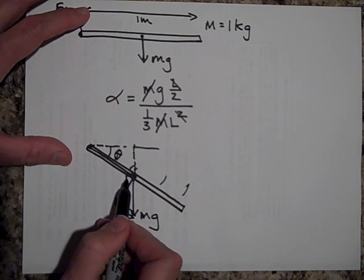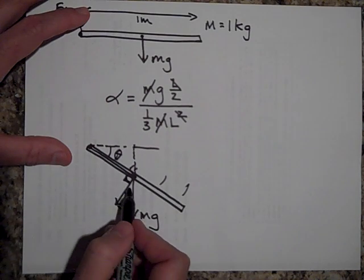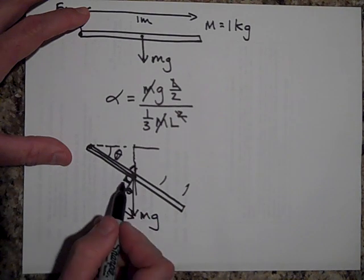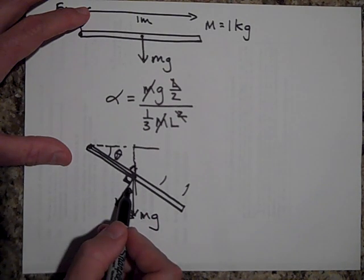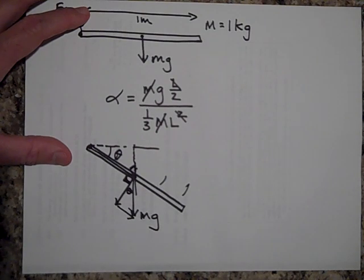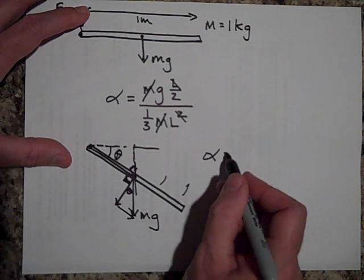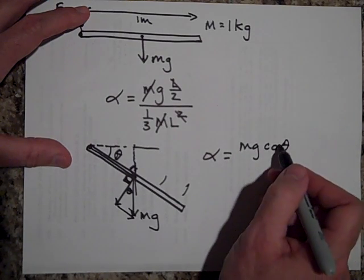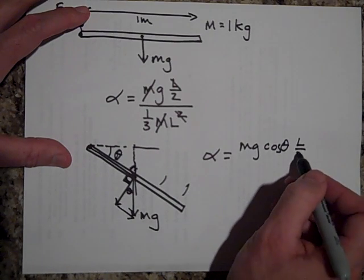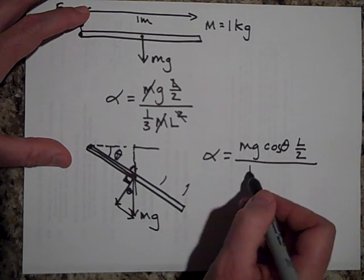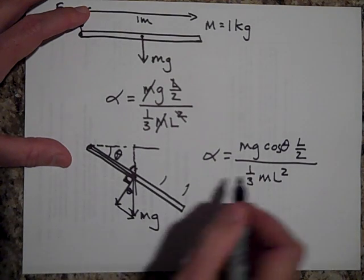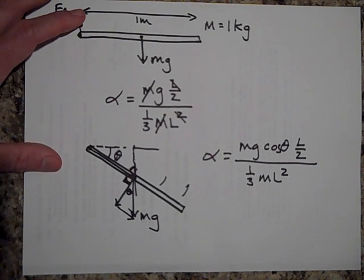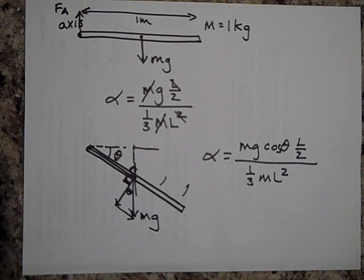So the new alpha would be MG times the cosine of theta, cosine of theta times L over 2, all over one third M L squared. And that's how you would do that. And you can get some cancellation then. Okay. That's all I have for you right now. Thanks.